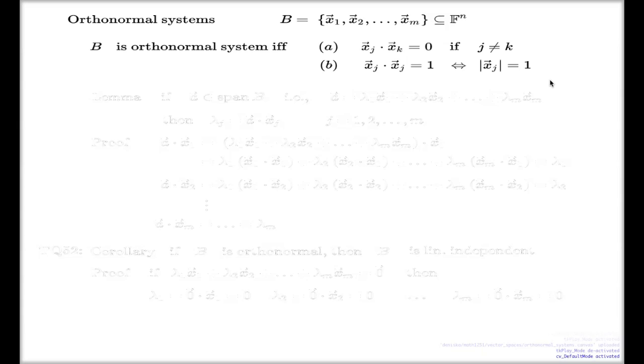Sometimes you may see systems where only the first condition is met, and the second one is a little bit relaxed, by not requiring equality to one, by just requiring not being zero. So sometimes the condition b can be relaxed to the condition b', where you require that the dot product of the vector with itself is simply non-zero. This is obviously more general than condition b.